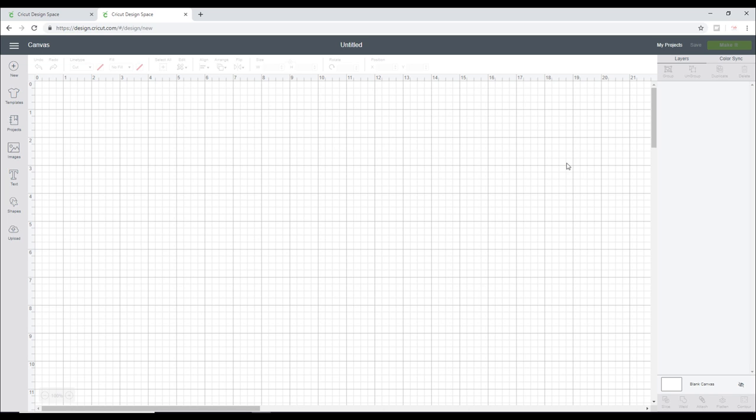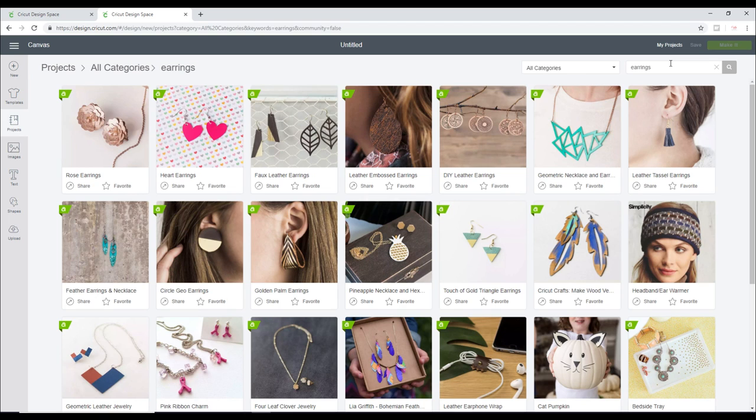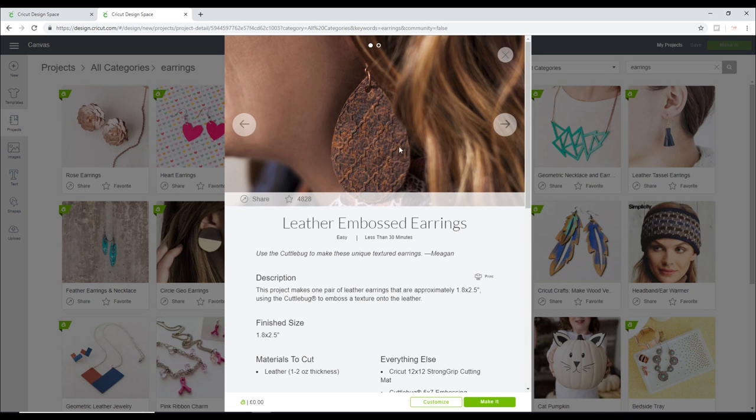The first thing I'm going to do is go to Projects and search for earrings. There is a pre-made project which is Leather Embossed Earrings, so we're just going to click on that and customize. Those are just pre-done earrings and I'm going to keep them exactly as they are.